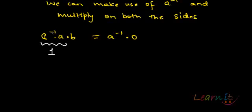And the product with 0, as we have learned, for any number the product with 0 will lead us to 0. This will imply 1·b equals 0.